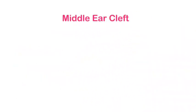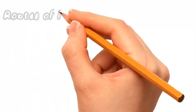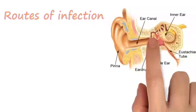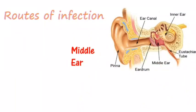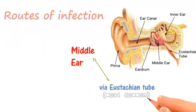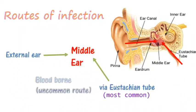The eustachian tube, tympanic cavity, attic, eardrum, and mastoid air cells constitute the middle ear cleft. The infection can reach the middle ear through various routes; most commonly it is via the eustachian tube. It can also spread from the external ear, and rarely it can be blood-borne.